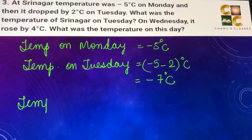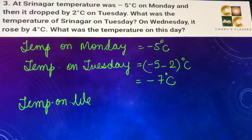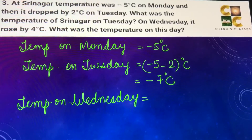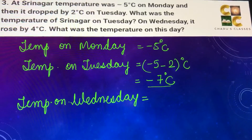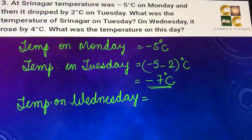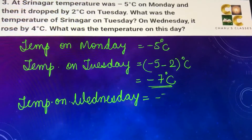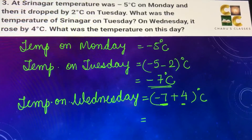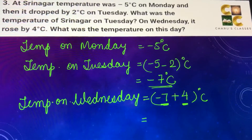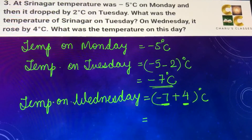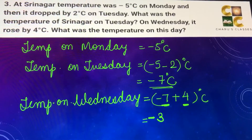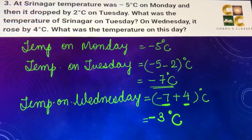Now let's find the temperature on Wednesday. On Wednesday the temperature rose by 4 degrees Celsius, so we start from minus 7 degrees Celsius and add 4. When one number is negative and the other is positive, we subtract them and take the sign of the bigger number. So minus 7 plus 4 equals minus 3 degrees Celsius. These are the temperatures on Tuesday and Wednesday.